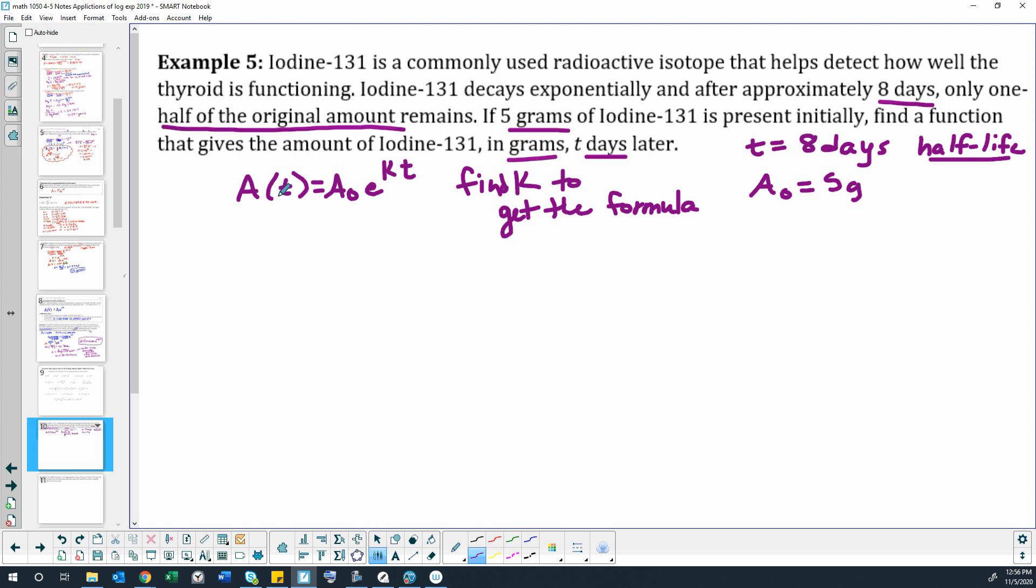We know that the amount after eight days is half, so the amount in eight days is half the original amount, so 2.5. The amount that we started with was five, we're trying to find k, and this happened in eight days so our t value is going to be in days. Here's another one of those situations where you don't actually need to know the amounts. We didn't need to take five and split it in half to get 2.5, we didn't even need to know the five. We do need the five when we're doing our final formula, but to find k we don't really need the five, we just need to know that it's half.